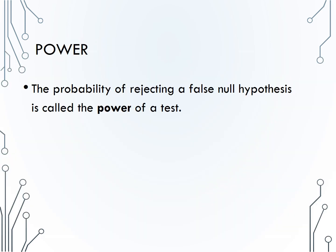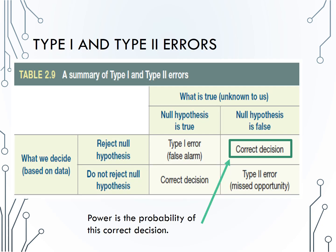Finally, let's discuss the power of the test, or the probability of rejecting a false null hypothesis. In table form, we would have to reject the null hypothesis and the null hypothesis be false in order to consider the power of the test. Note that power is the probability of the correct decision, so power is actually a value between 0 and 1, as opposed to types of errors which are events that could occur.